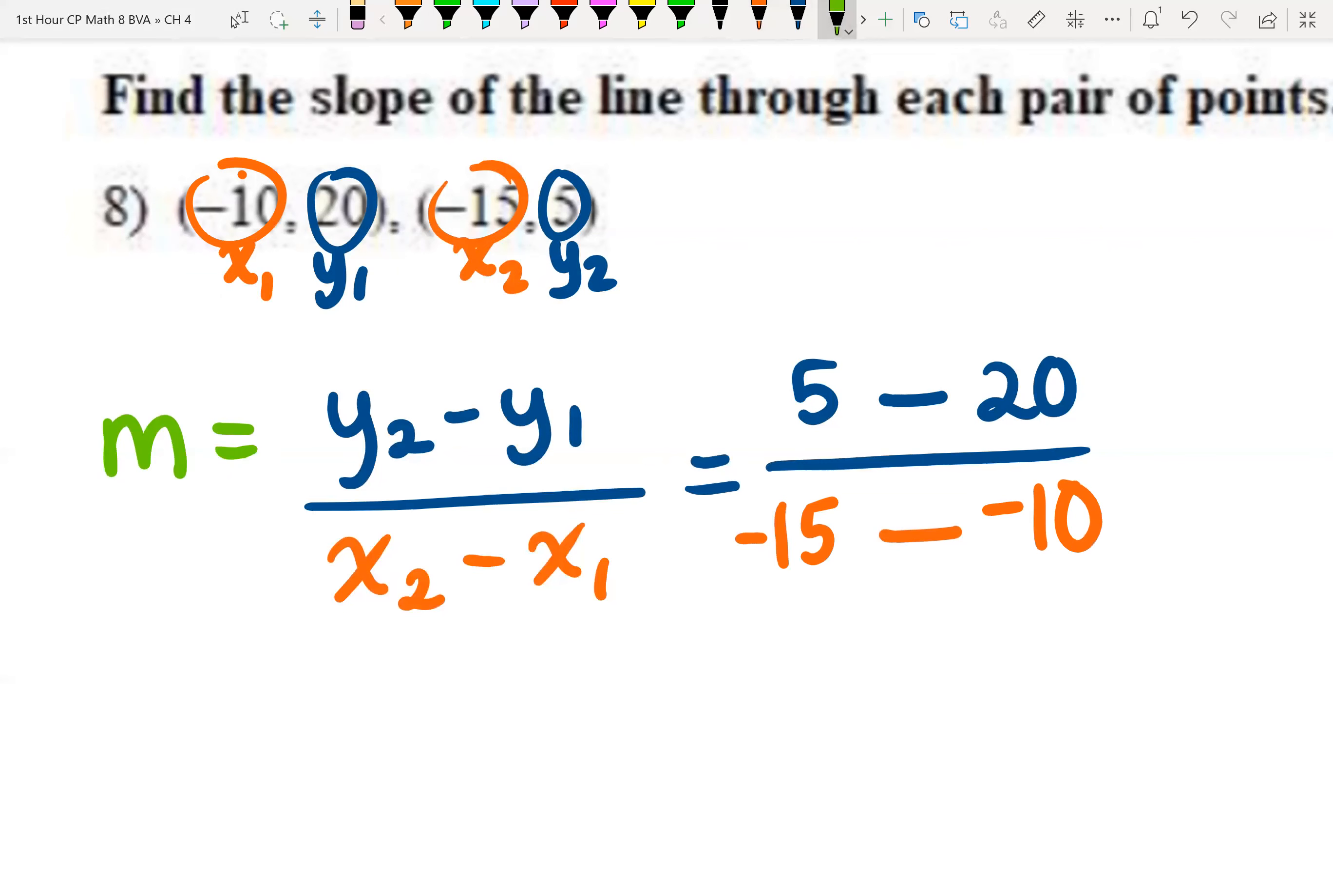Up top, you have 5 minus 20, or negative 15. And down below, slow down for a second because we have a minus and negative, and that's going to turn into plus a positive. Negative 15 plus positive 10 is negative 5.